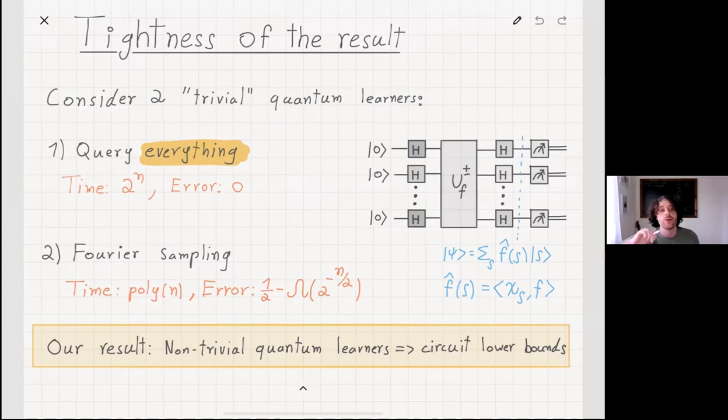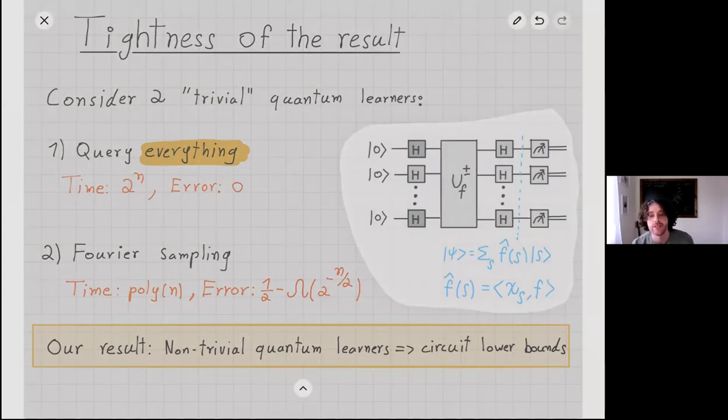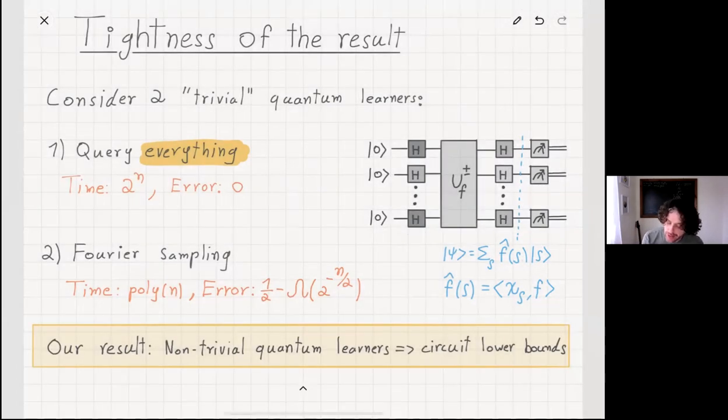At the other end of the spectrum, we can actually use, not completely trivial, but trivial in the sense that it assumes no structure, so we can use Fourier sampling. We can use the famous circuit that we see in a similar scenario. Essentially, we take the state, put it in uniform superposition, we query it, and at the end we apply Hadamard, so we get the Fourier decomposition over the group GF2 to the n. The point is that if we measure the state, then we are getting a Fourier coefficient with mass that is corresponding to its probability.